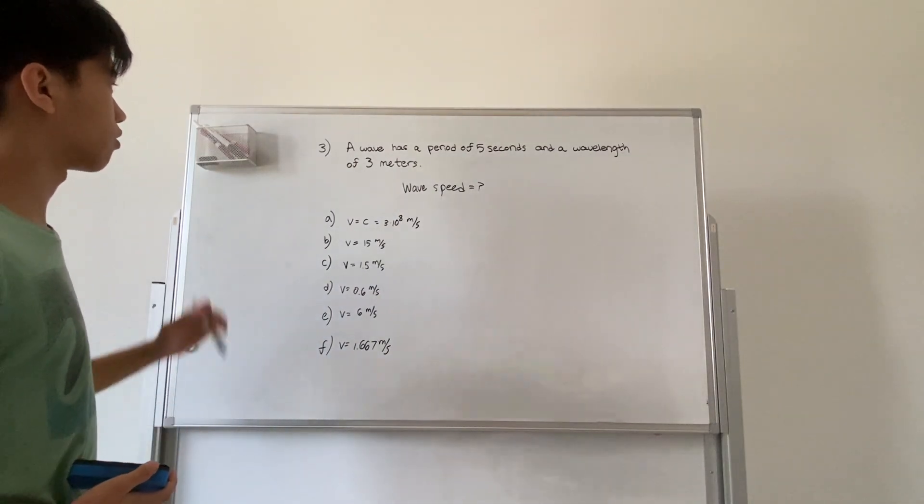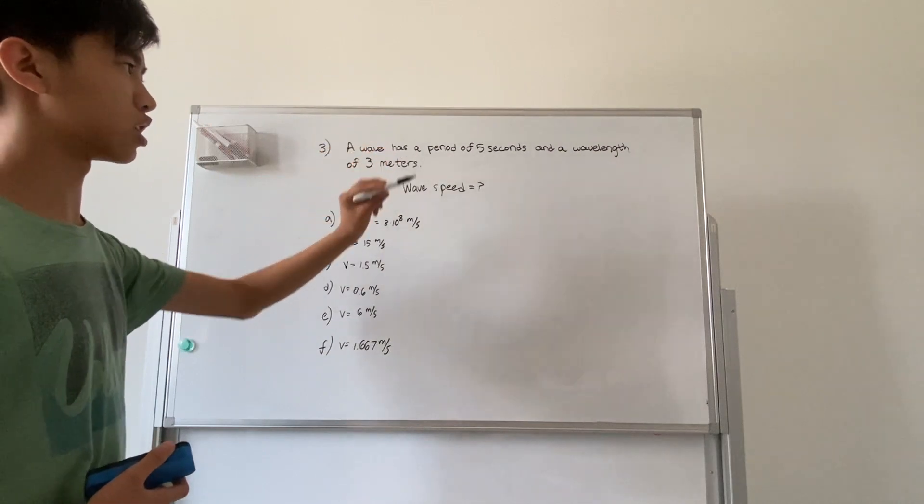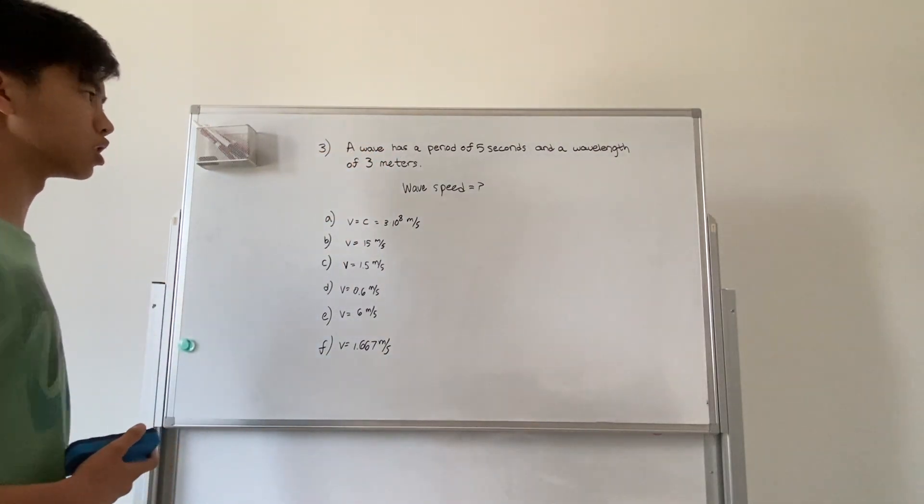Here we have problem three of topic test one. A wave has a period of five seconds and a wavelength of three meters. What is the wave speed?